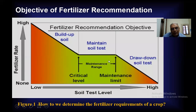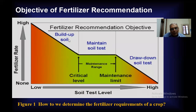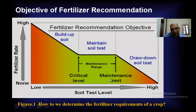We have to maintain the soil test level. When the level is high, a draw-down soil test applies. As the soil test level is low, the fertilizer rate is high; when the soil test level is high, less fertilizer is required. We have to apply nutrients within the maintenance range — between the critical level and the maintenance limit — for the removal of the particular crop to be grown and for building up the soil for future years.